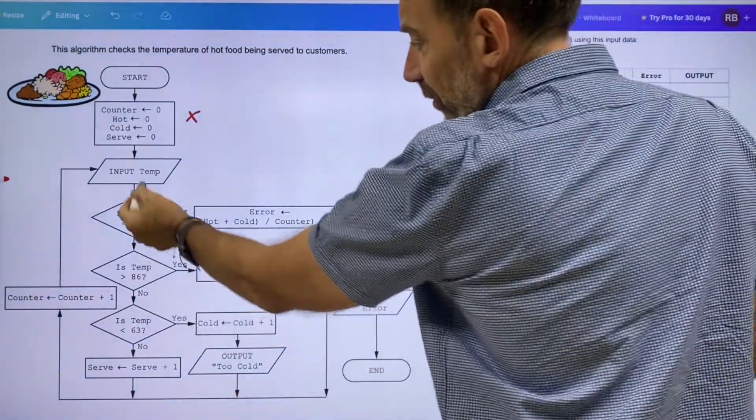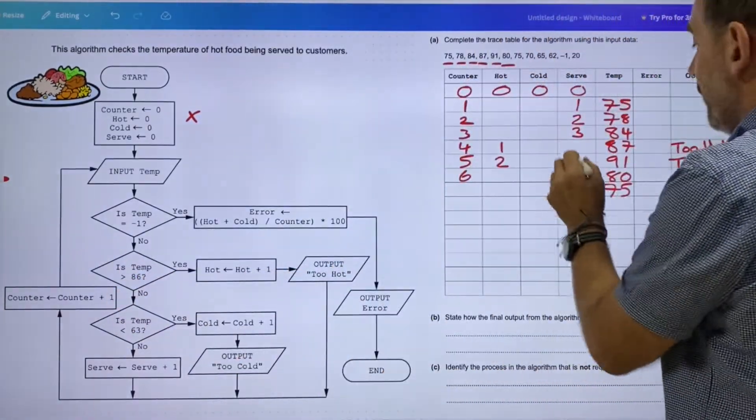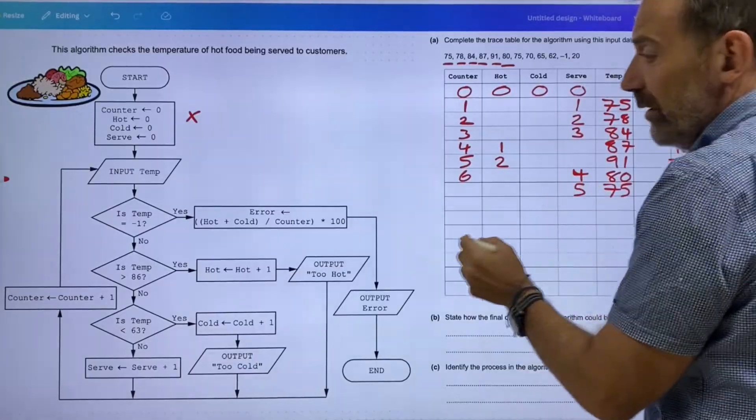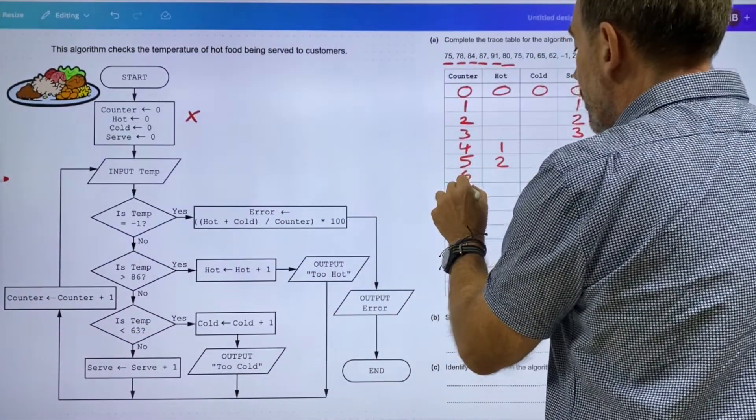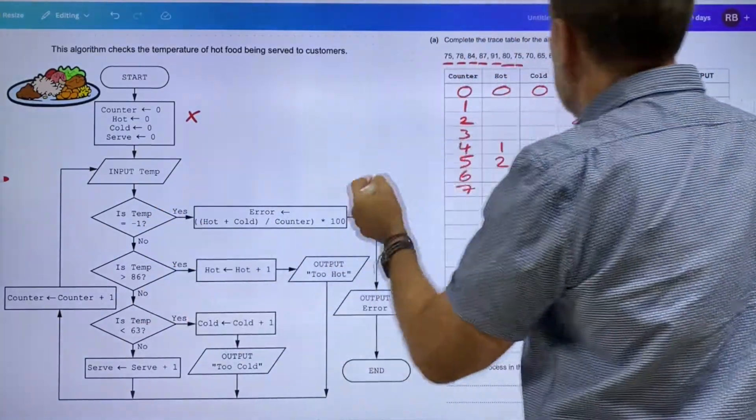Counter equals counter plus one. That was my six. Input the temperature, so we've done that. We're back onto what looks like normal numbers now. So this is just going to go through—it's not greater than 86, it's not less than 63, so serve equals serve plus one, which is going to be four in there.